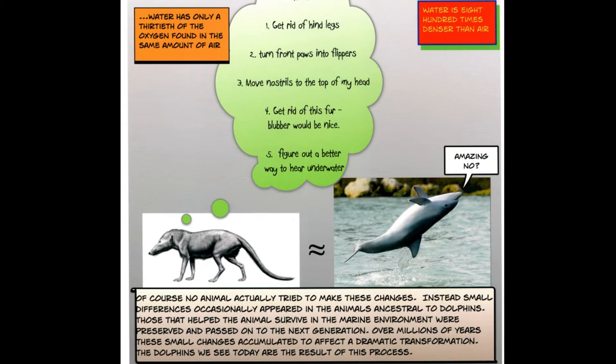The land animal in the photo on the left needed to get rid of its hind legs, turn its front paws into flippers, move the nostrils to the top of its head, get rid of the fur and get blubber instead, and figure out a better way to hear underwater.